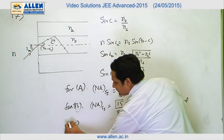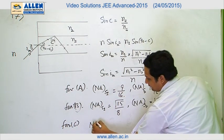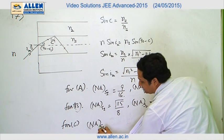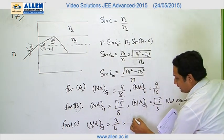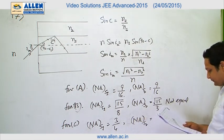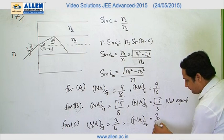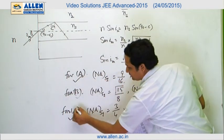For option C, the value of NA for S1 comes out to be 3/4. And the value of NA for S2 also comes out to be 3/4. So they are equal. Therefore, the answer will be A and C, not B.